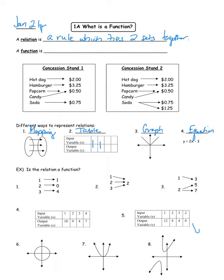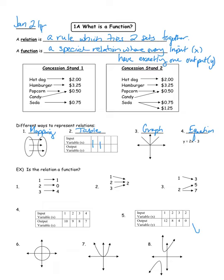Those are all relations. A function is a special relation where every input — which are typically the x's — has exactly one output, which are the y values. So a function is a special relation where every input has exactly one output.